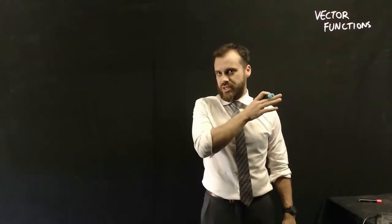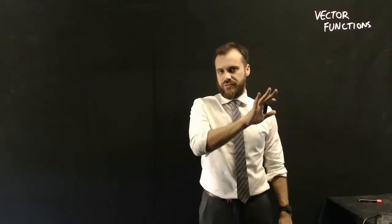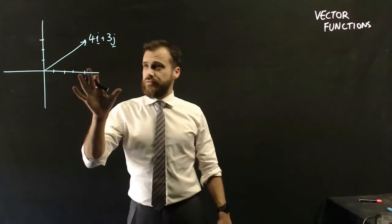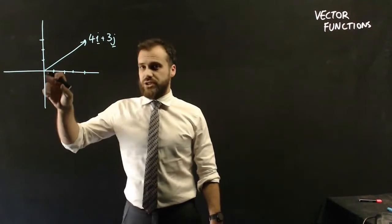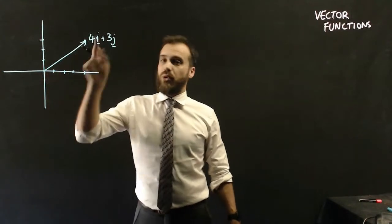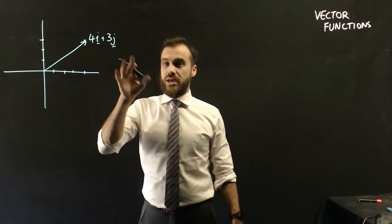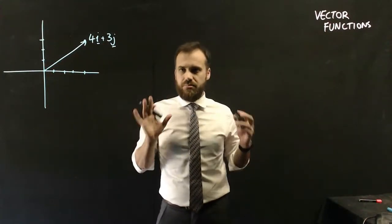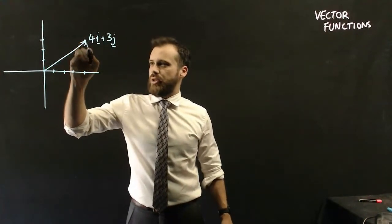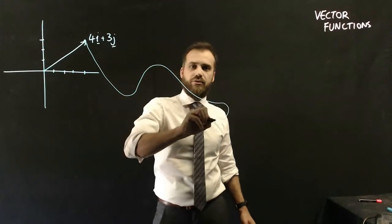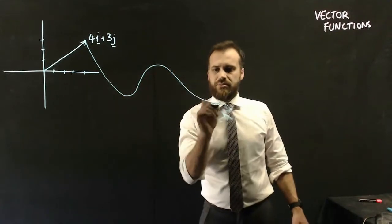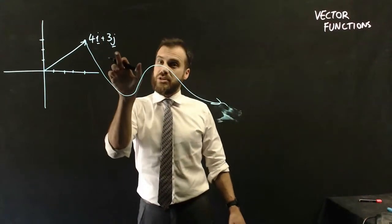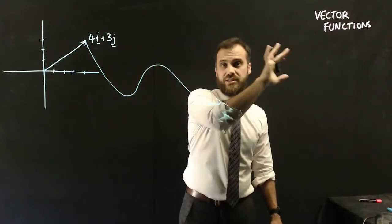We're going to be talking about vector functions. To get started, we need to talk about the position vector. The position vector tells you where an object is in relation to some origin — it's an arrow pointing to the point 4i plus 3j, telling you the thing is 4 across and 3 up. But things move, and for that we're not just going to be able to use a position vector. Instead, we're going to have to use a vector function.